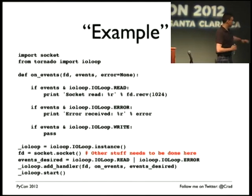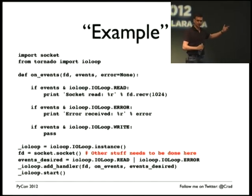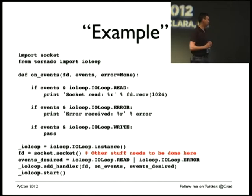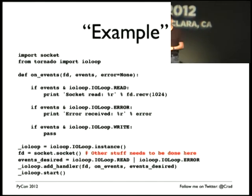An example — not fully working — of handling the IO loop at the low level: starting at the bottom, we get an instance of the IO loop, create our file descriptor for our socket, and at this point, if we're writing a client, we'd connect and do everything else before setting the events we want to receive. We add the handler to the IO loop, tell the IO loop to start, and we're on our way.